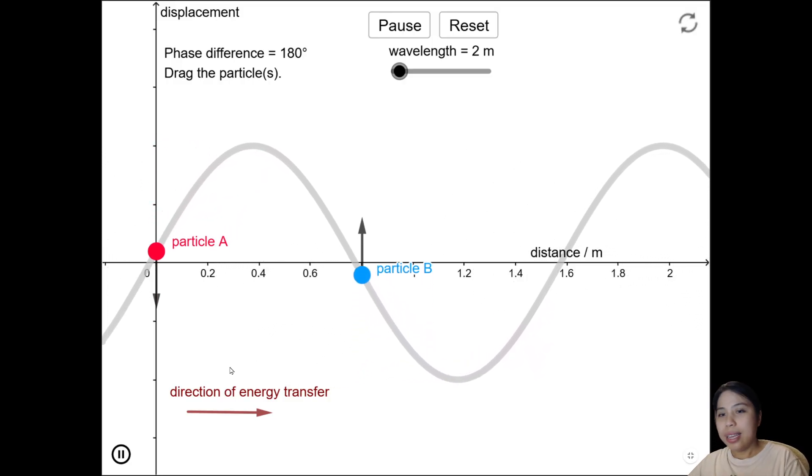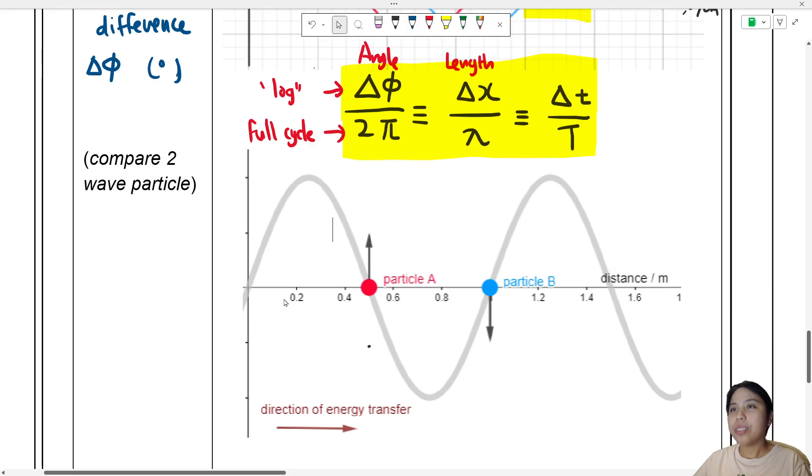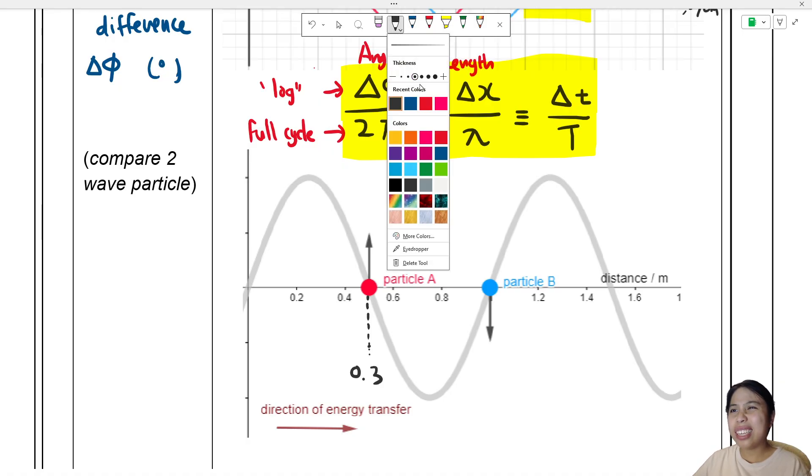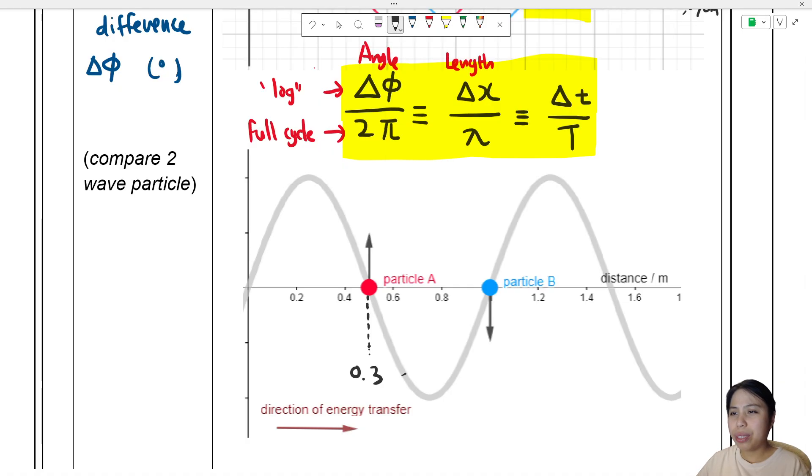So this one is also in terms of distance. Let's look at the equation now. This here, we will do what we do. I cannot really see the number here, but it looks like this number here is 0.3 - I think 0.4, 0.6, yeah yeah, 0.3.